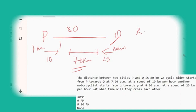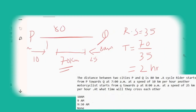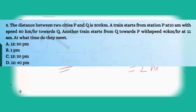Since they are going towards each other, the relative speed = 10 + 25 = 35 km/h. Using Time = Distance / Speed: Time = 70 / 35 = 2 hours. So the motorcyclist takes 2 hours to cross the cyclist. Now let's see the actual question asked in the exam.